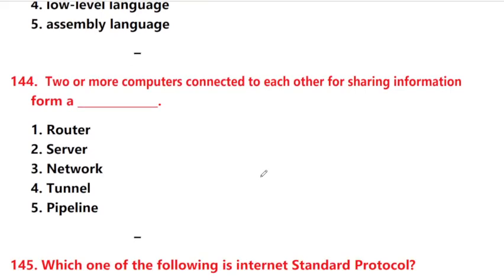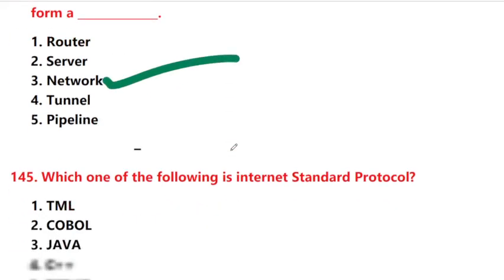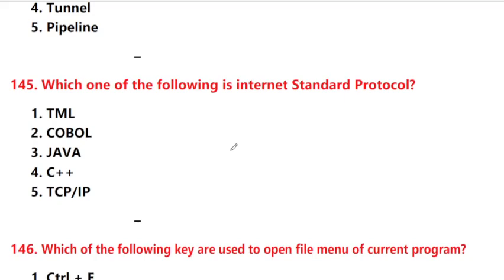Two or more computers connected to each other for sharing information form a — option 3: network. Which one of the following is the internet standard protocol? Answer is option 5: TCP/IP.